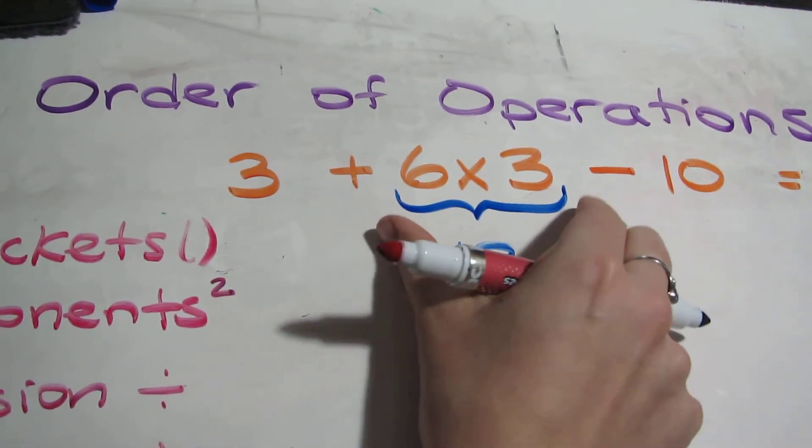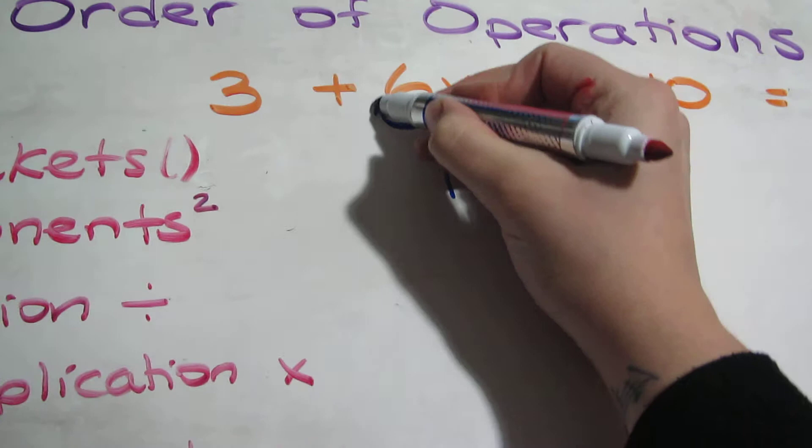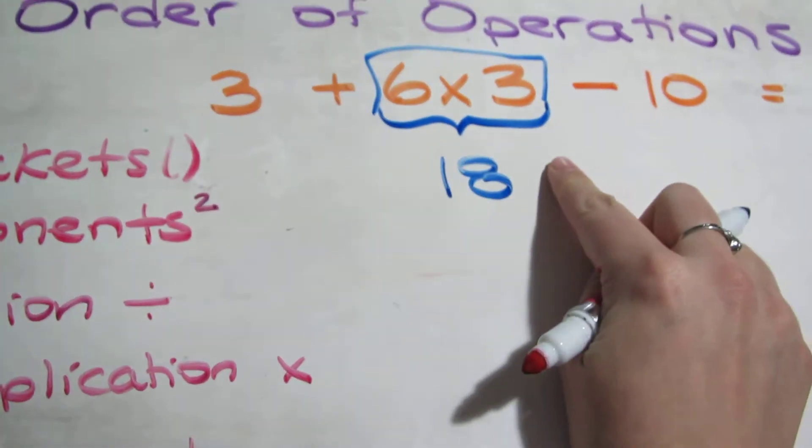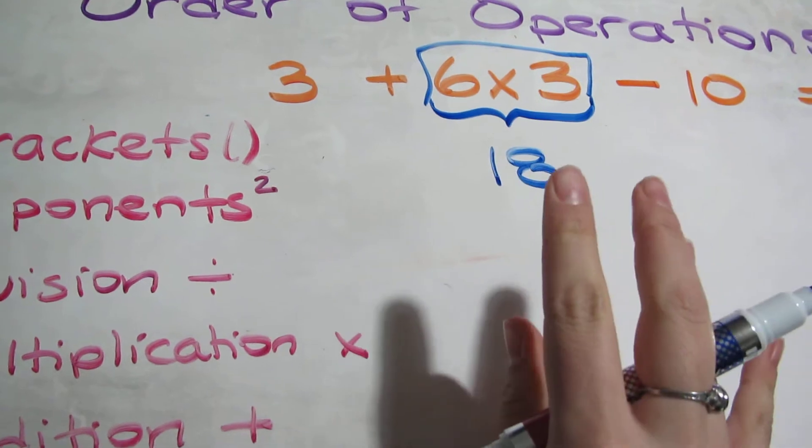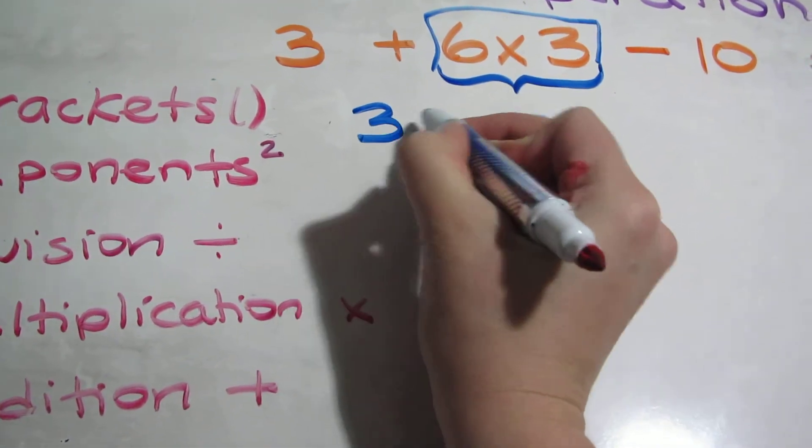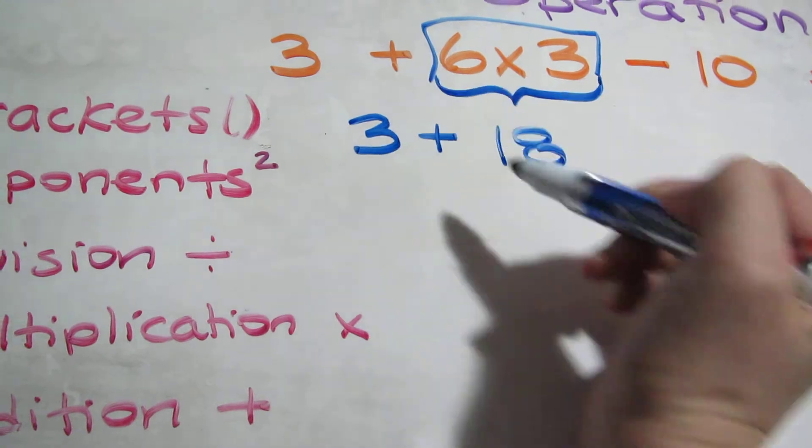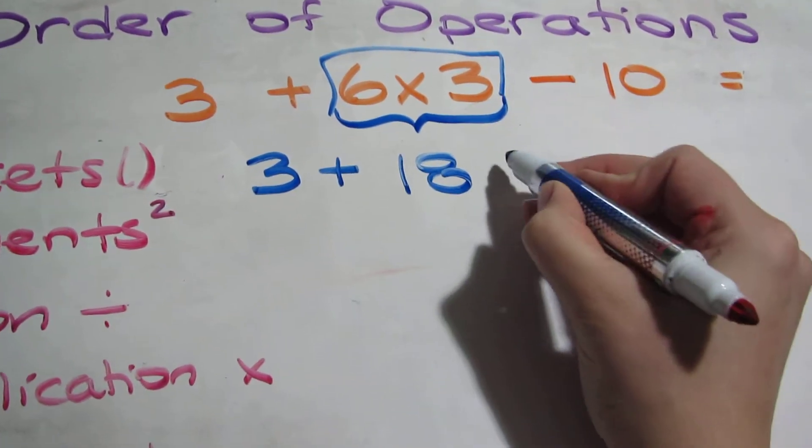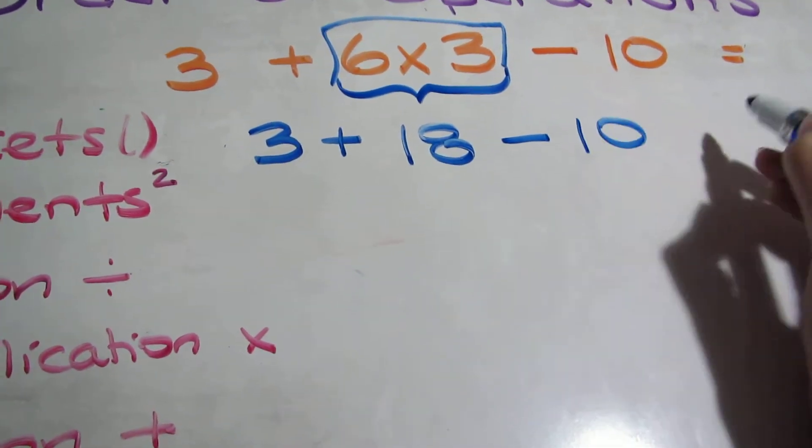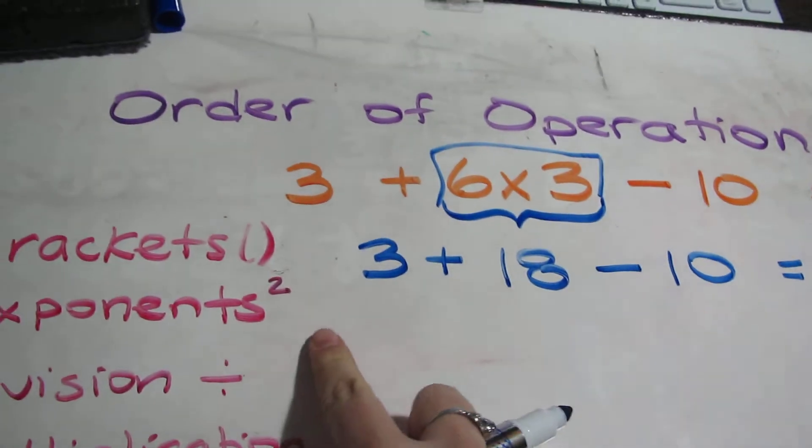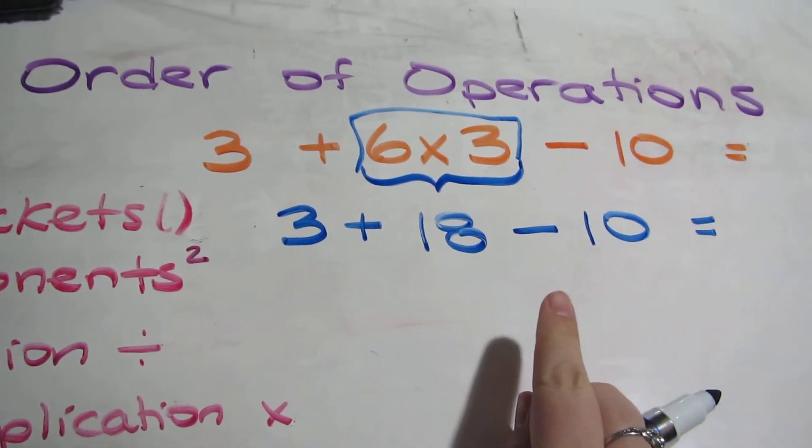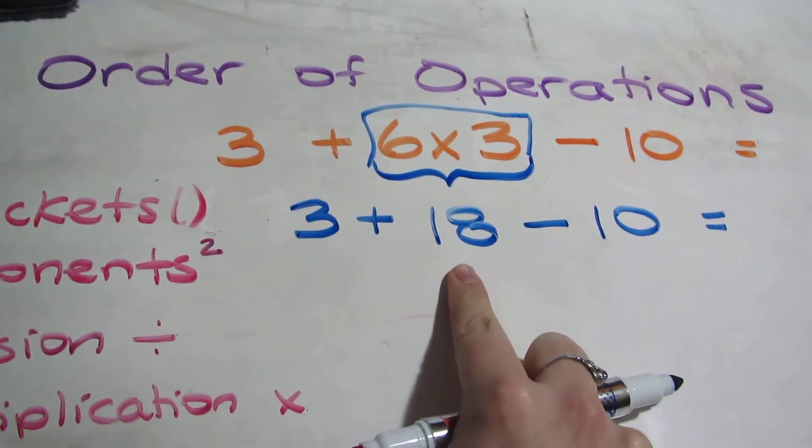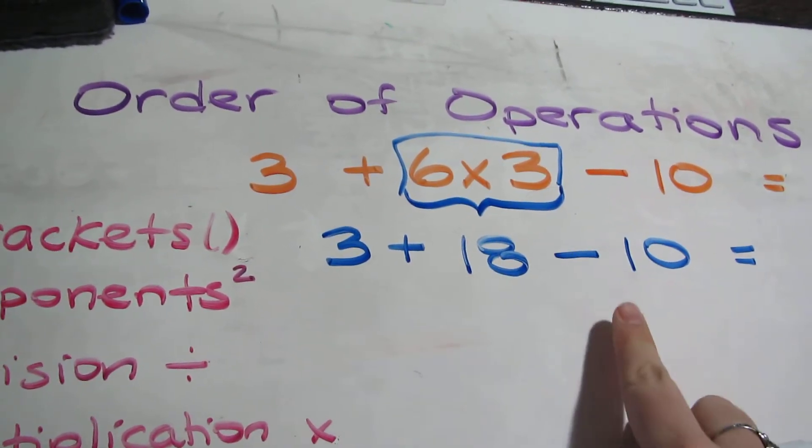Now I'm finished working with this section of numbers. The only thing I need to do is bring down the numbers I haven't used yet. I haven't used the 3 or that addition symbol, and I haven't used the subtract 10 yet. Notice how I rewrote the whole thing to make sure I didn't miss or forget any numbers. I have my answer to the first part, and now I'll move on with the others.